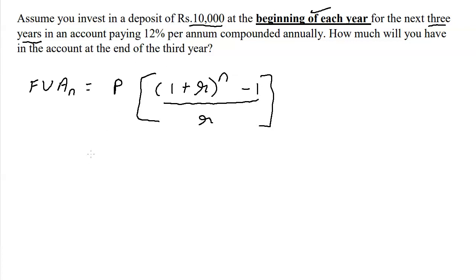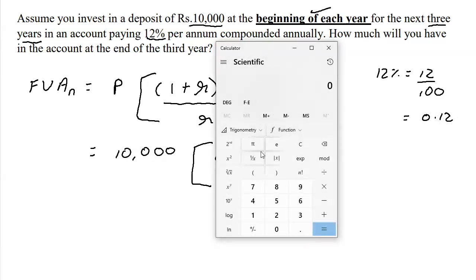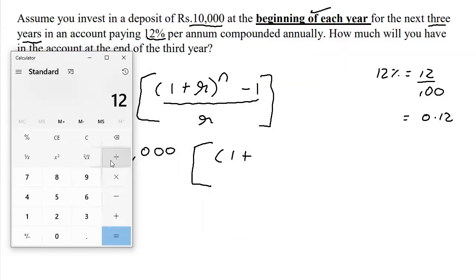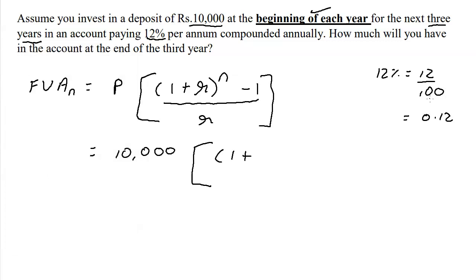Now substituting for the data that we have, we have 10,000 open bracket 1 plus 12 percent. And remember, 12 percent means 12 upon 100, which in decimal terms is 0.12. If you're confused as to how to do it, you're allowed a simple calculator. If I simply take 12 and divide by 100, I get 0.12. Alternatively, the trick is you look at the number of zeros in the denominator—there are two zeros, so the decimal point will shift two steps to the left.